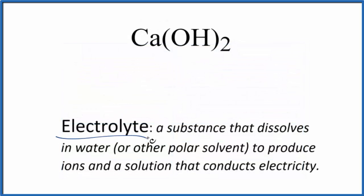Our definition of an electrolyte is a substance that dissolves in water or another polar solvent, and it produces ions. And these ions, they allow the solution to conduct electricity.